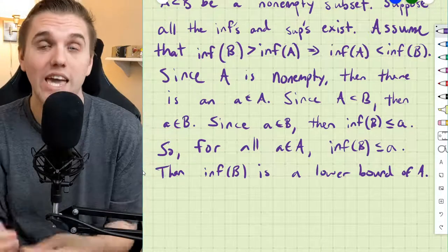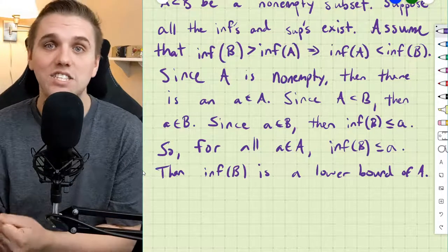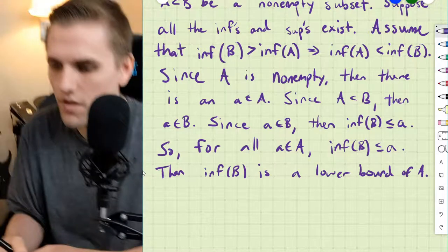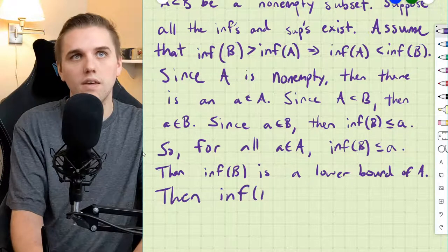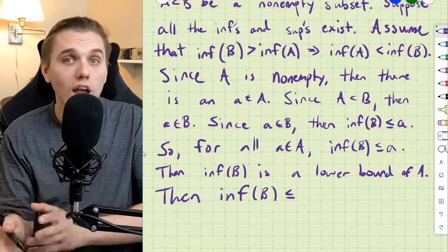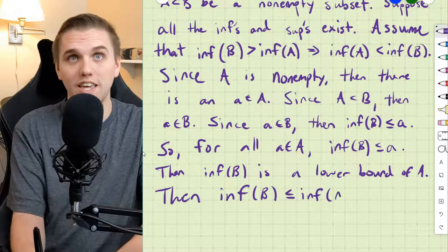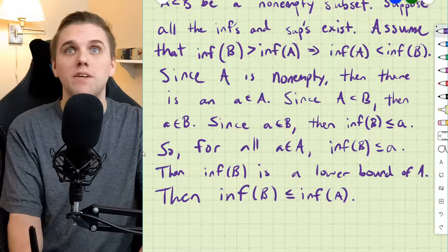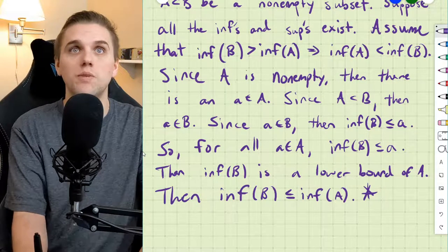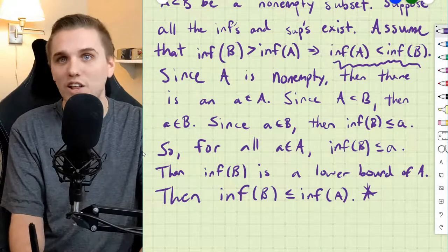So since the infimum of B is a lower bound of A, then it has to be less than or equal to the greatest lower bound of A. So then the infimum of B is less than or equal to the greatest lower bound of A, which specifically is called the infimum of A. But this is where the contradiction comes in, because we assumed that the infimum of A is less than the infimum of B, and that clearly contradicts that.